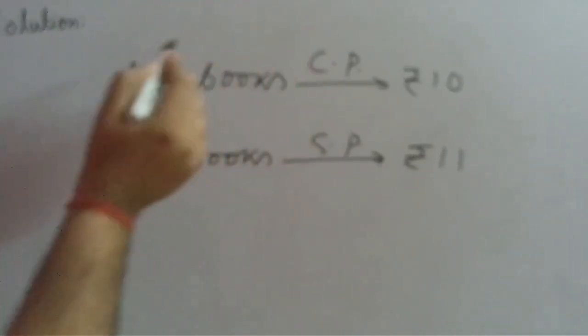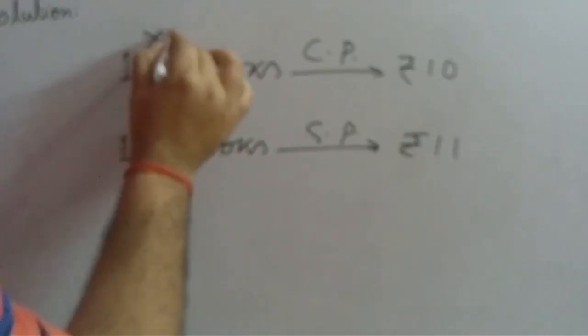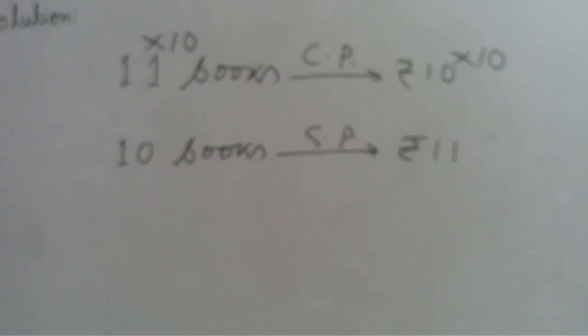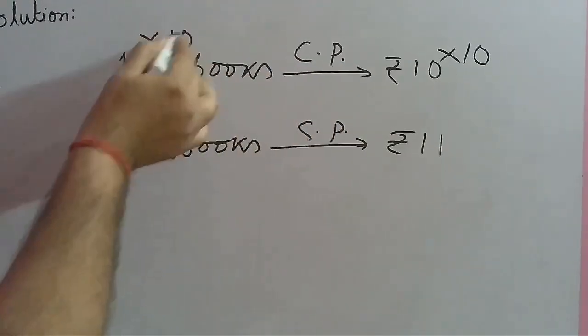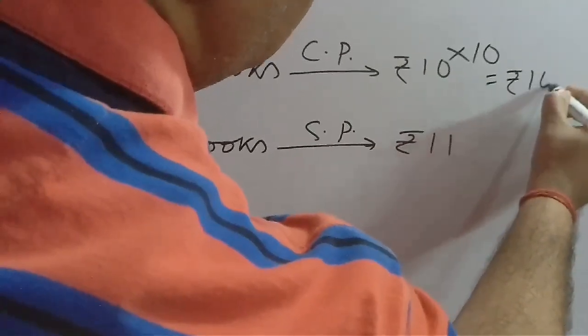Since cost price of 11 books is 10, for 110 books we must multiply both sides by 10. That means CP of 110 books is rupees 100.